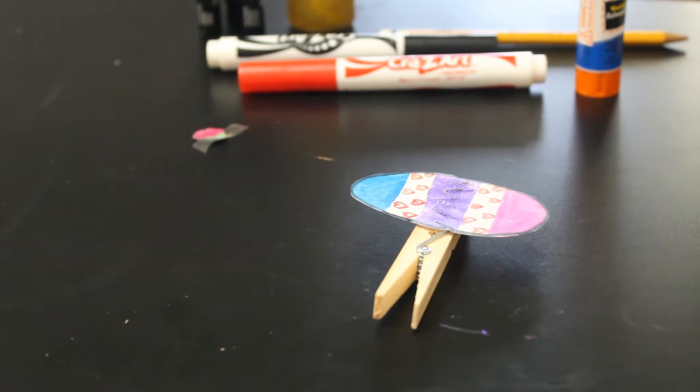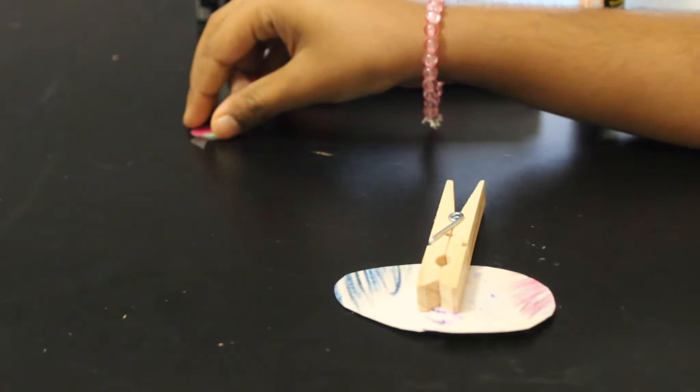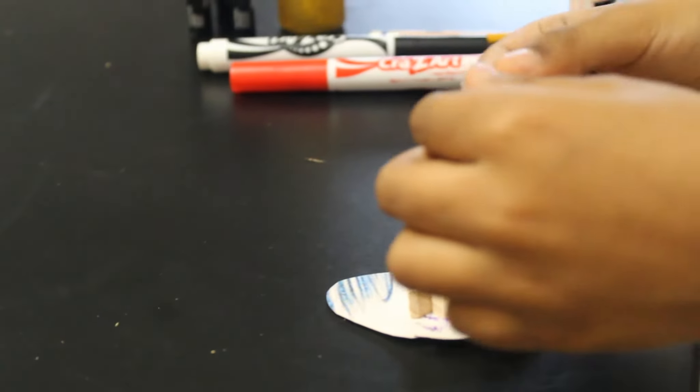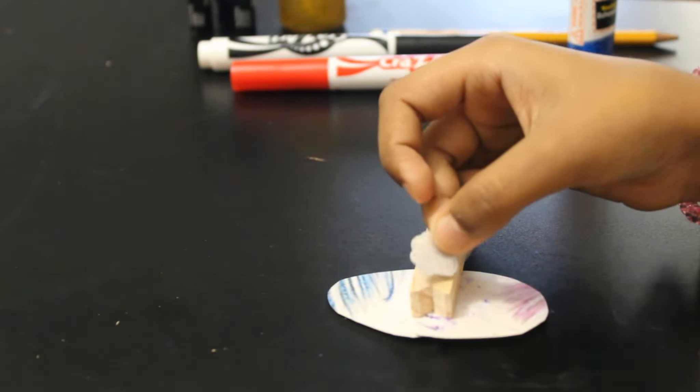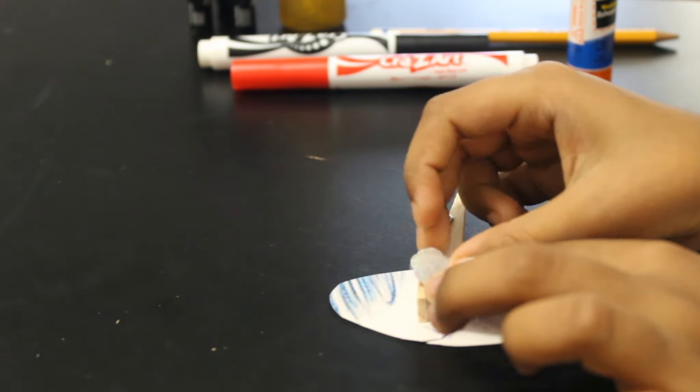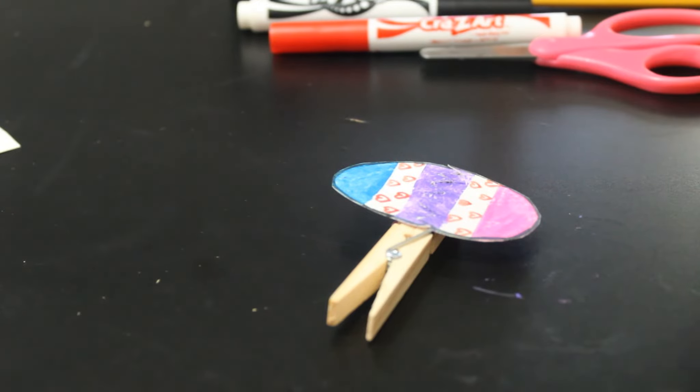Next I am going to place a cupcake liner on the back side of the pin. Then I am going to decorate our egg.